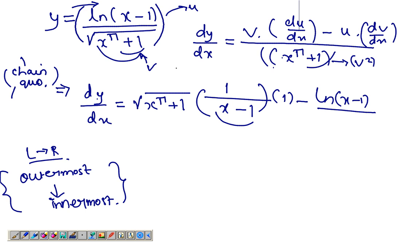Now, the derivative of v would be, let's start from the outside. You have a root in the outside, which makes it 1 over 2 root x to the pi plus 1 and then the inside, which is pi x to the power pi minus 1.